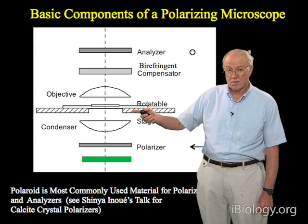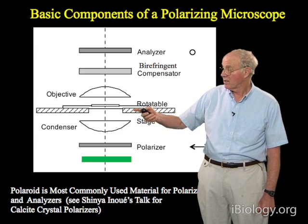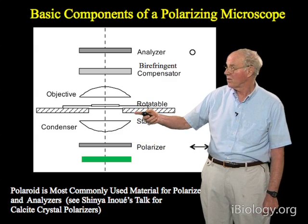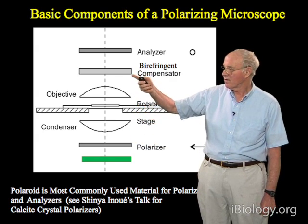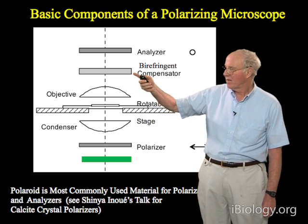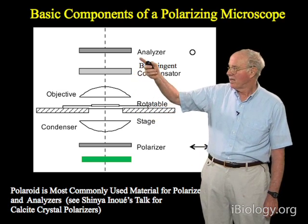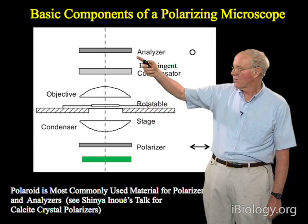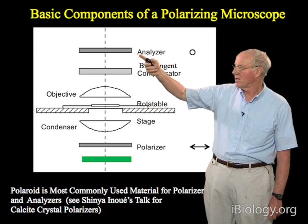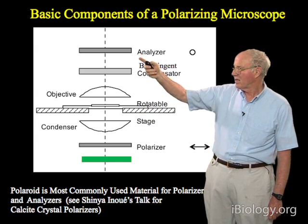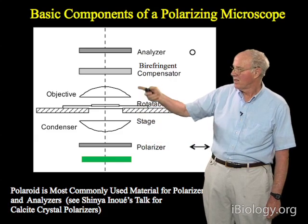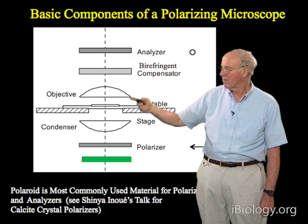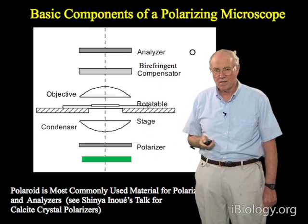Contrast is dependent on the rotation of the specimen relative to the polarizer's transmission azimuth. Polarizing microscopes can also have birefringent compensators. In addition, there is an analyzer — a polarizer whose vibration transmission direction is oriented at 90 degrees to that of the polarizer — so it's at the extinction position, canceling the light coming from the polarizer in the background.